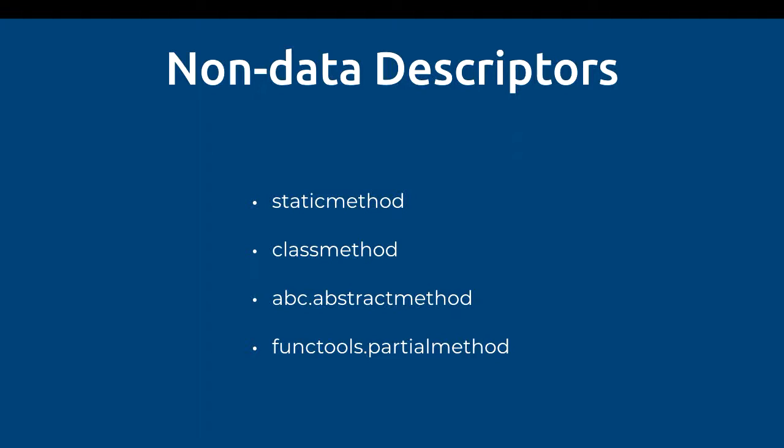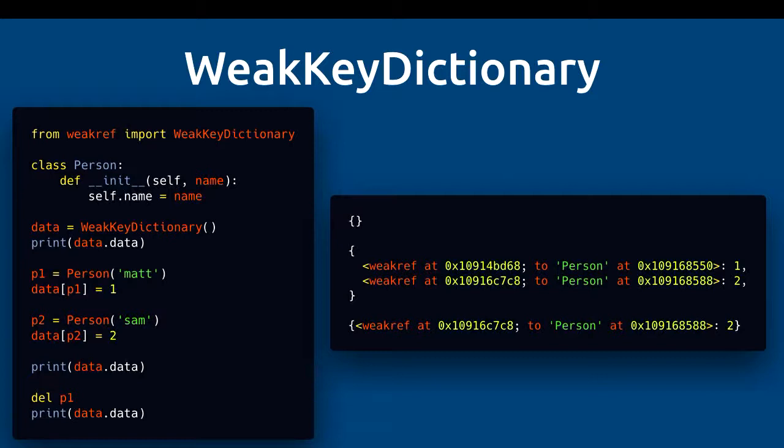The rest of this talk is going to be about data descriptors. However, I want to cover non-data descriptors quickly. A lot of things in Python with different libraries occasionally seem to be magic — descriptors are the magic. You might be familiar with staticmethod, classmethod, ABC abstractmethod, and functools partial. These can all be re-implemented in pure Python as non-data descriptors by implementing the __get__ method and changing around the arguments to achieve whatever their purpose is.